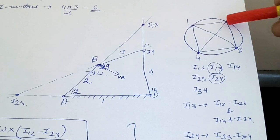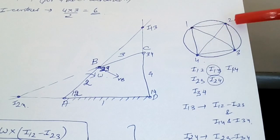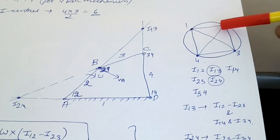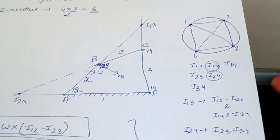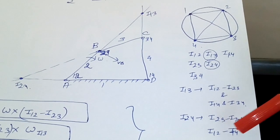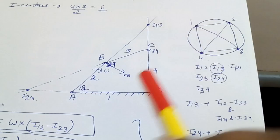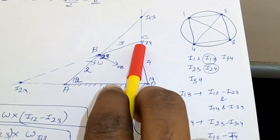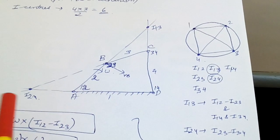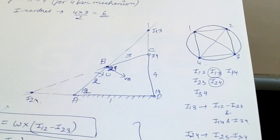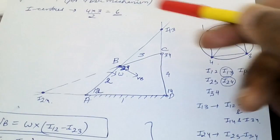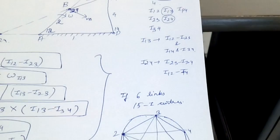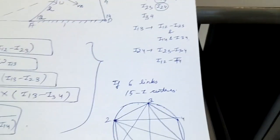Similarly, to find I24: you can reach from 2 to 4 via 2→3→4 or via 2→1→4. Extend the line through I23 and I34, and the line through I12 and I14. Their intersection gives point I24. You have now plotted all 6 I-centers.